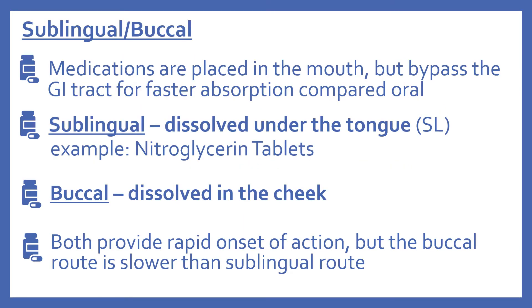Now we'll look at sublingual and buccal. These medications are placed in the mouth but they bypass the GI tract for faster absorption compared to oral. Sublingual means under the tongue and is abbreviated SL. An example is nitroglycerin tablets for chest pain. Buccal is in the cheek. Both provide rapid onset of action, but the buccal route is slower than the sublingual route.